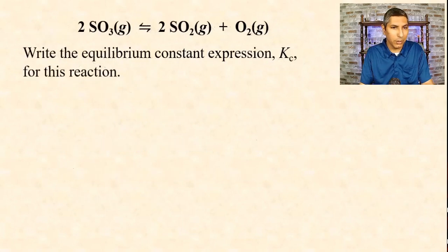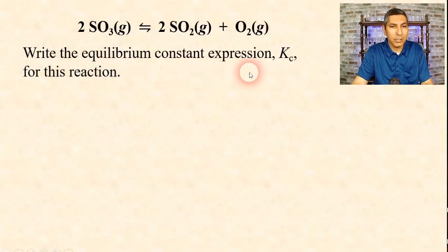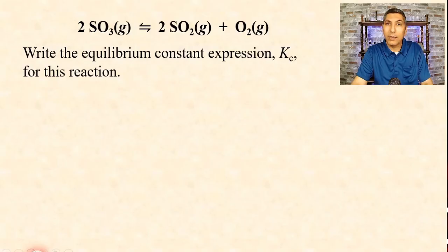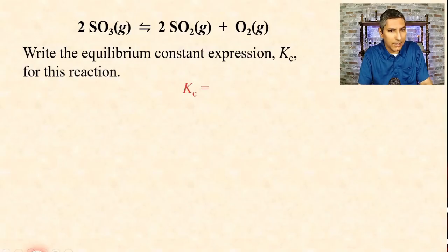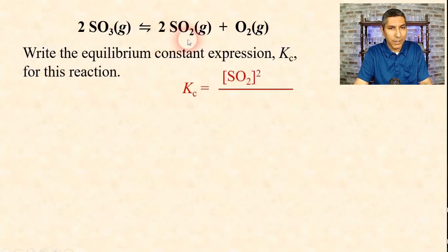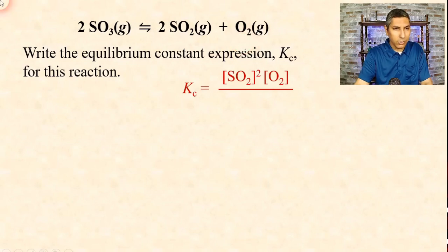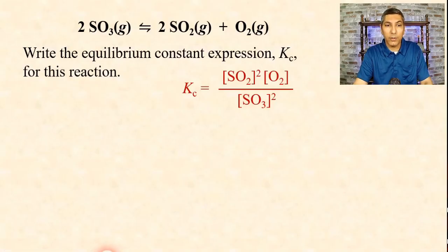Let's try one more example. We have another equation, and the first part says to write the equilibrium constant expression Kc for this reaction. Products over reactants raised to the power of the coefficients equals Kc. So in this case, Kc equals the concentration of SO2, quantity squared, times the concentration of O2, all over the concentration of SO3, quantity squared. That is our equilibrium constant expression Kc.